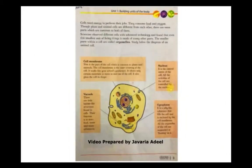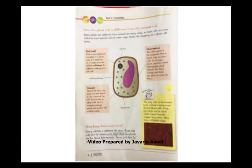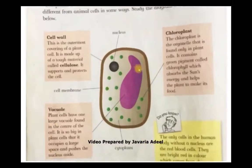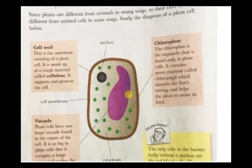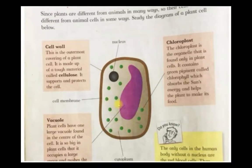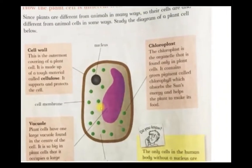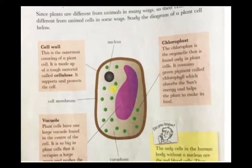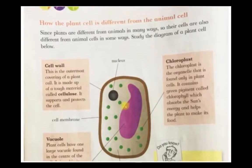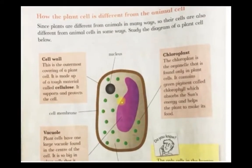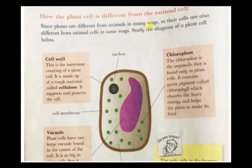Now let's move on to page 4, where they explain how the plant cell is different from the animal cell. This structure here is basically a plant cell. Since plants are different from animals in many ways, their cells are also different from animal cells in some ways.